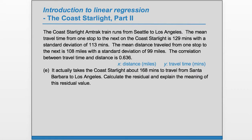Part E: It actually takes the Coast Starlight about 168 minutes to travel from Santa Barbara to Los Angeles. Calculate the residual and explain the meaning of this residual value. So the residual is the actual minus the predicted, always in that order, the actual minus the predicted.